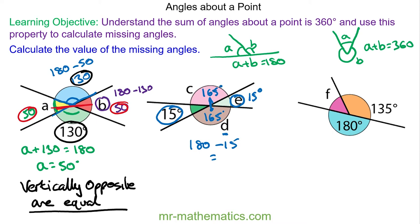We can check that this is right because we can add them all together to get angles about a point. So we have 15 plus 15 plus 165, which is angle c, plus angle d, which is again 165, and together they all add up to 360, which is right.